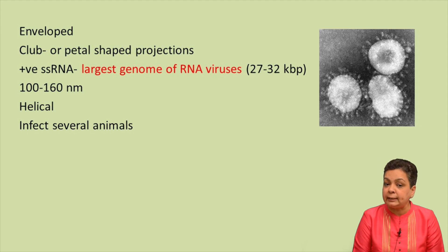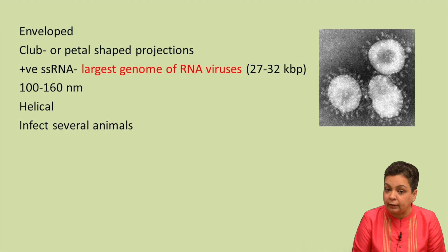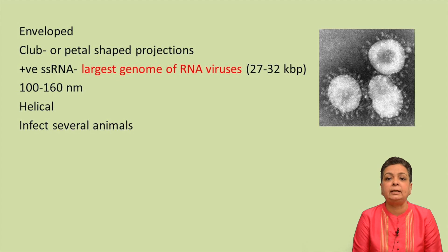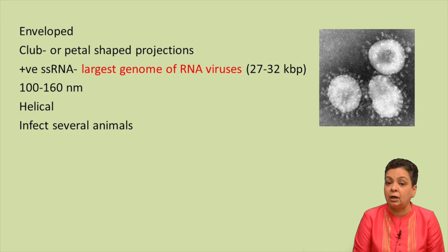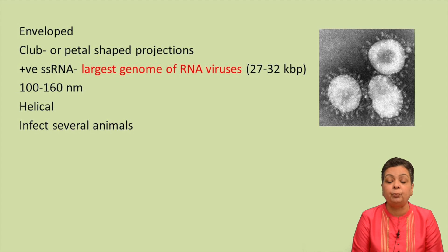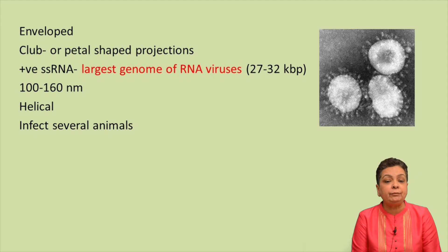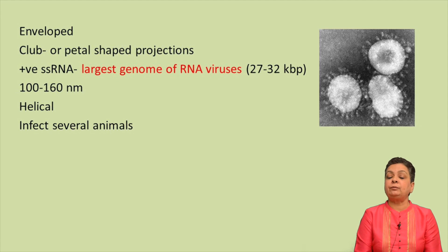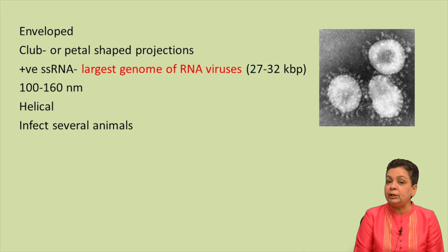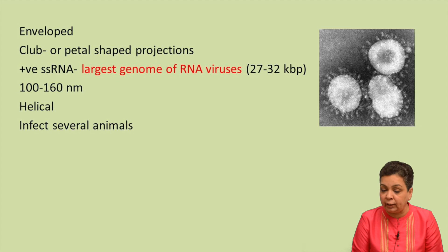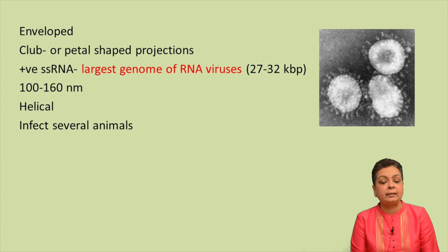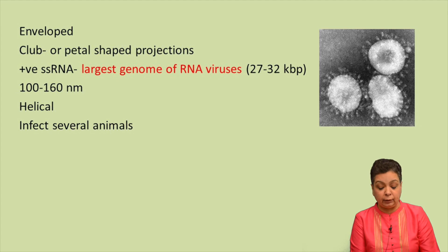Coronaviruses have a positive single-stranded RNA genome, and amongst all RNA viruses, they have the largest genome — 27 to 32 kilobase pairs in size. The size of the virus is 100 to 160 nanometers. They have helical symmetry and can infect several animals.